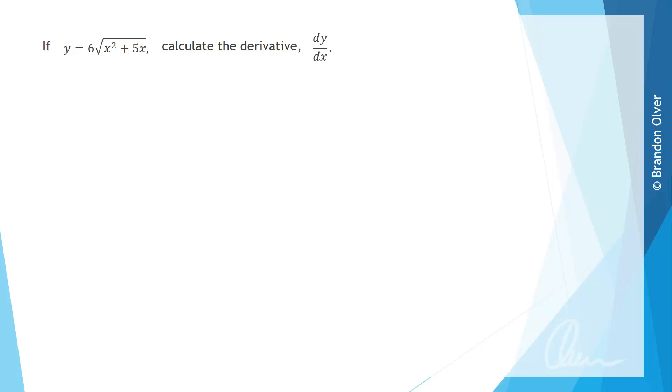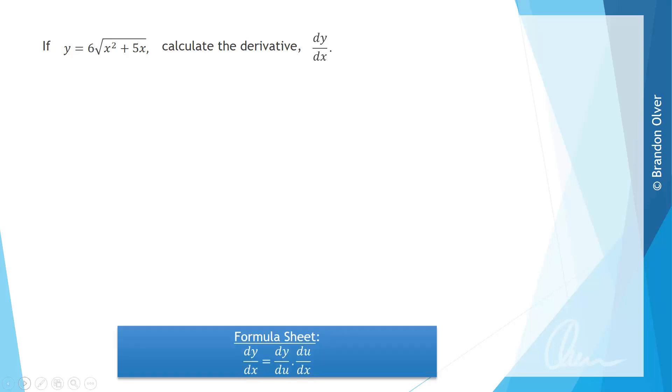For this question we can see that there is a function inside another function, so x squared plus 5x is inside the square root function. So we need to apply the chain rule, and from the formula sheet we know that the chain rule is given by dy/dx equals dy/du times du/dx.